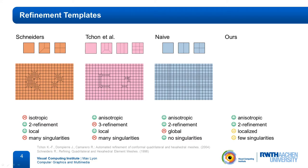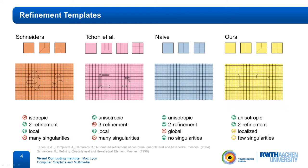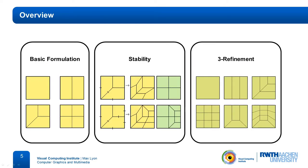With our method, we want to perform anisotropic two refinement that finds a compromise between locality and number of inserted singularities. We are going to use the same templates as Schneiders, with the addition of an anisotropic one-to-two split. Our refinement is based on solving a binary program. I am going to first present our basic binary program formulation, then talk about an extension leading to higher quality elements when our algorithm is applied iteratively, and finally briefly talk about another version which performs three refinement.